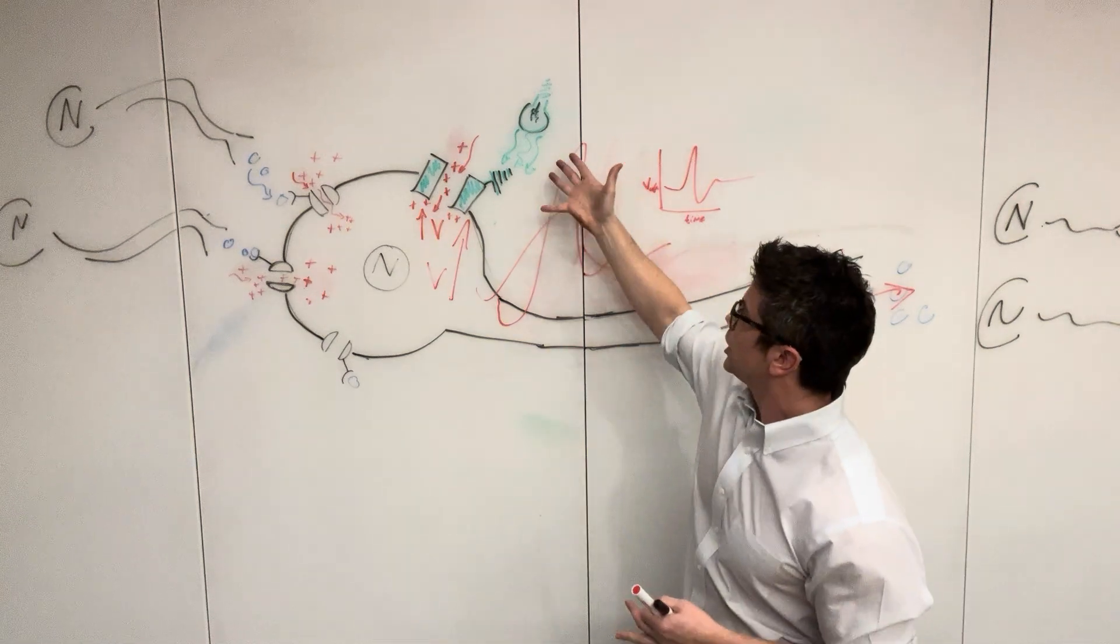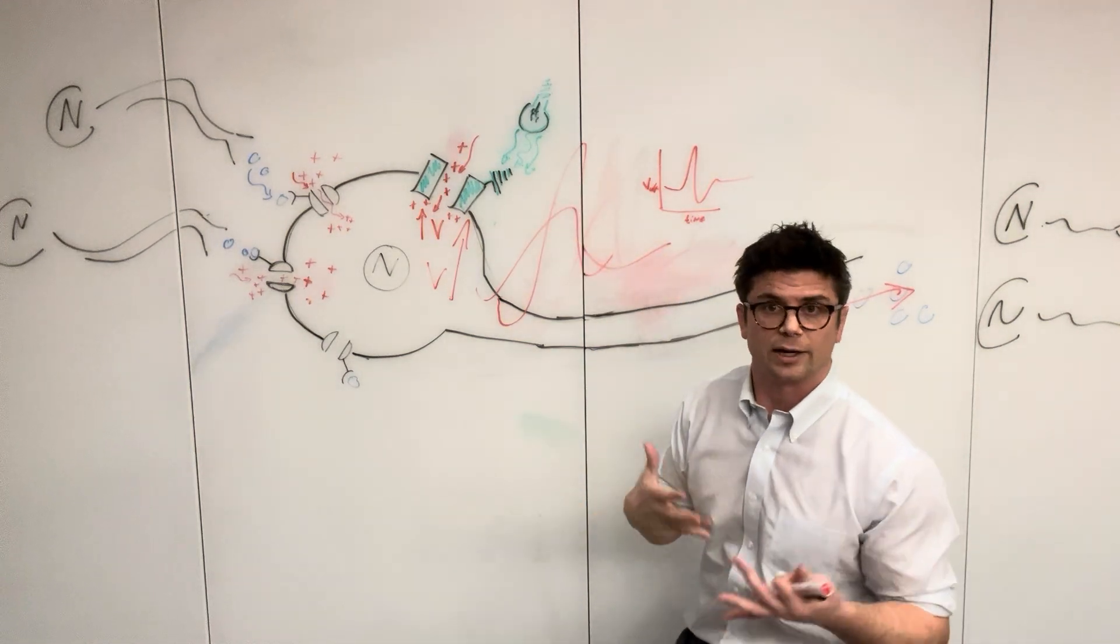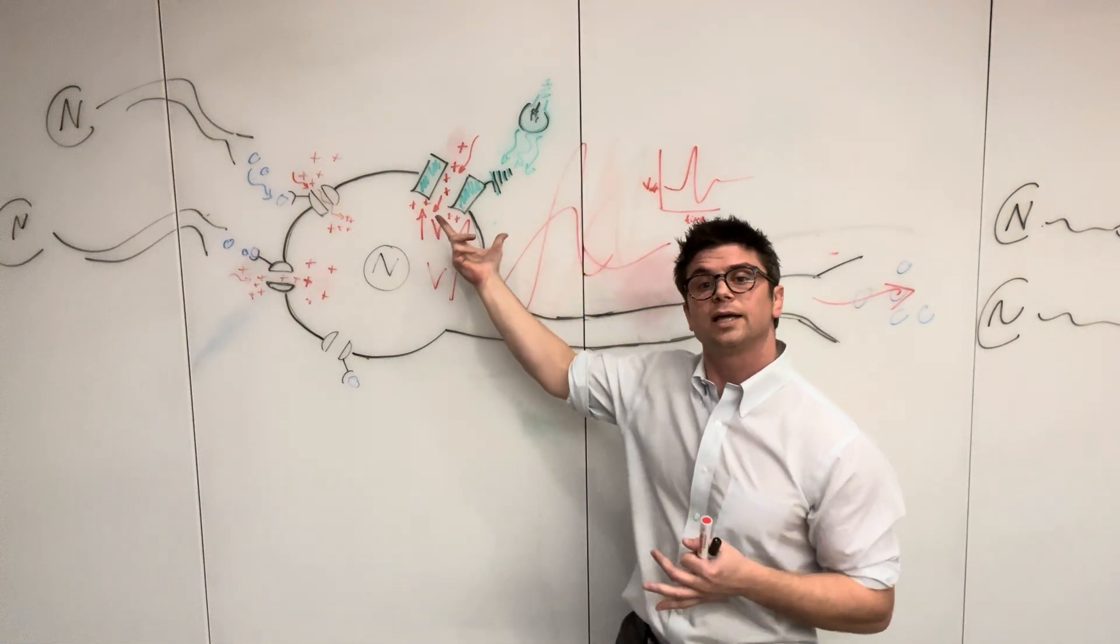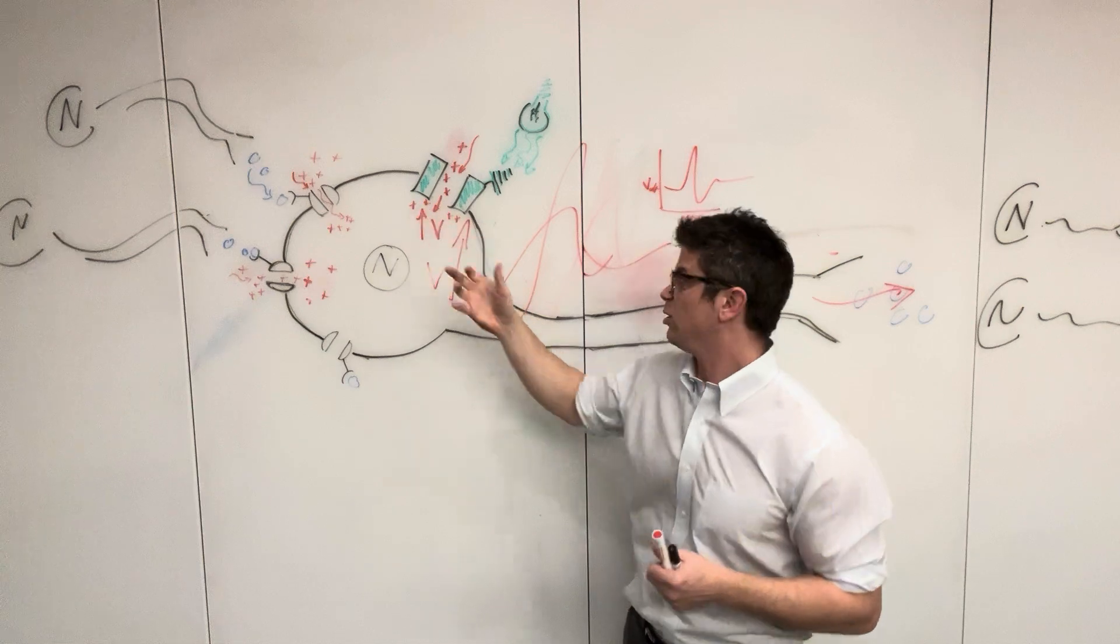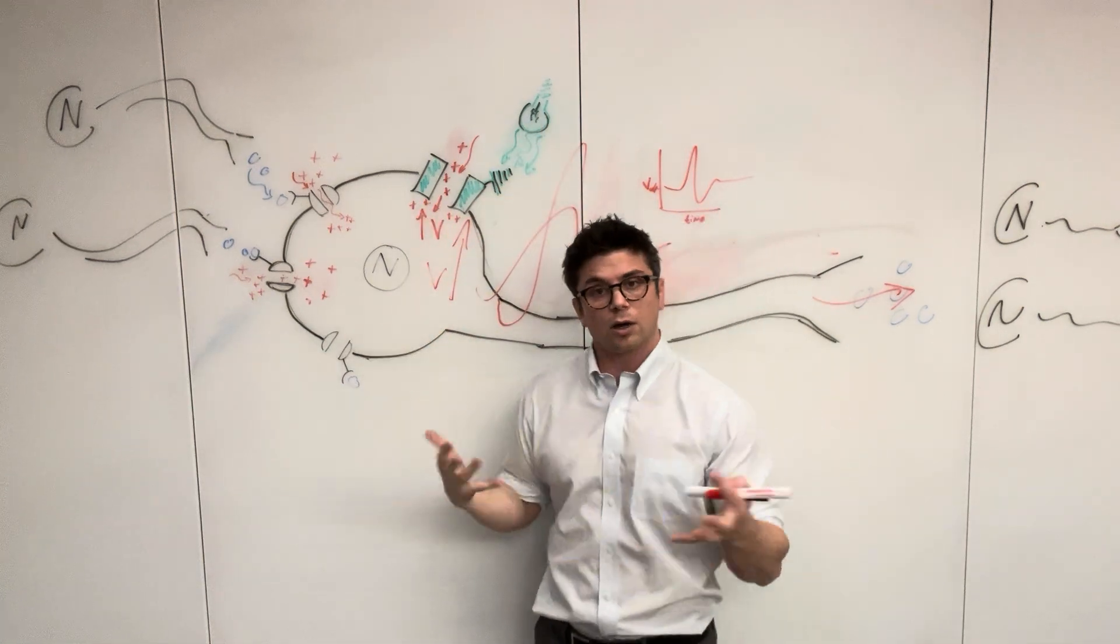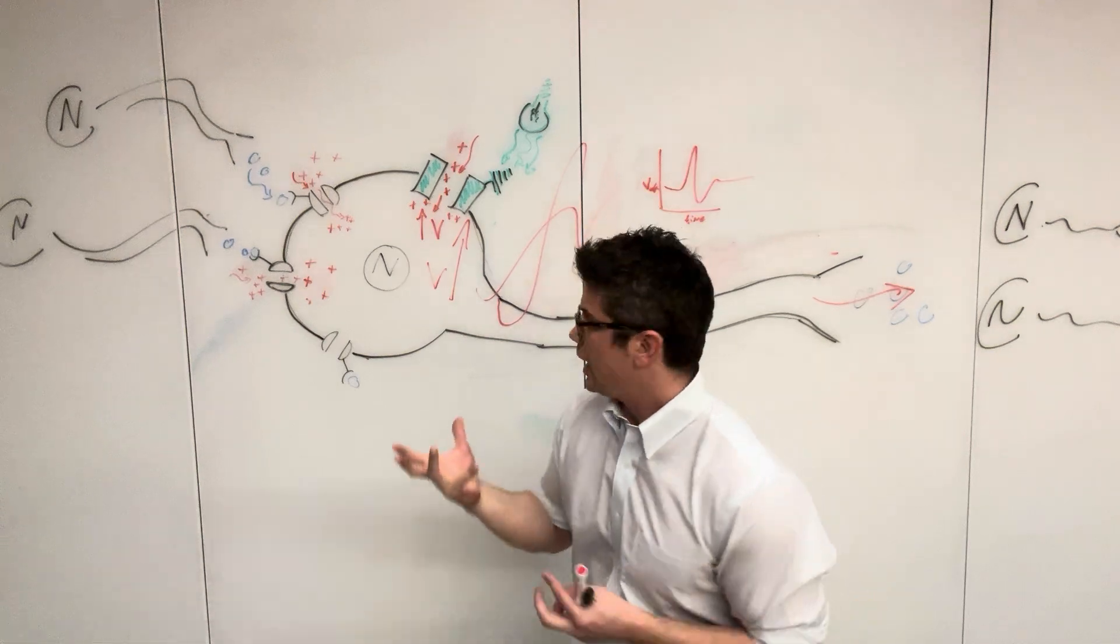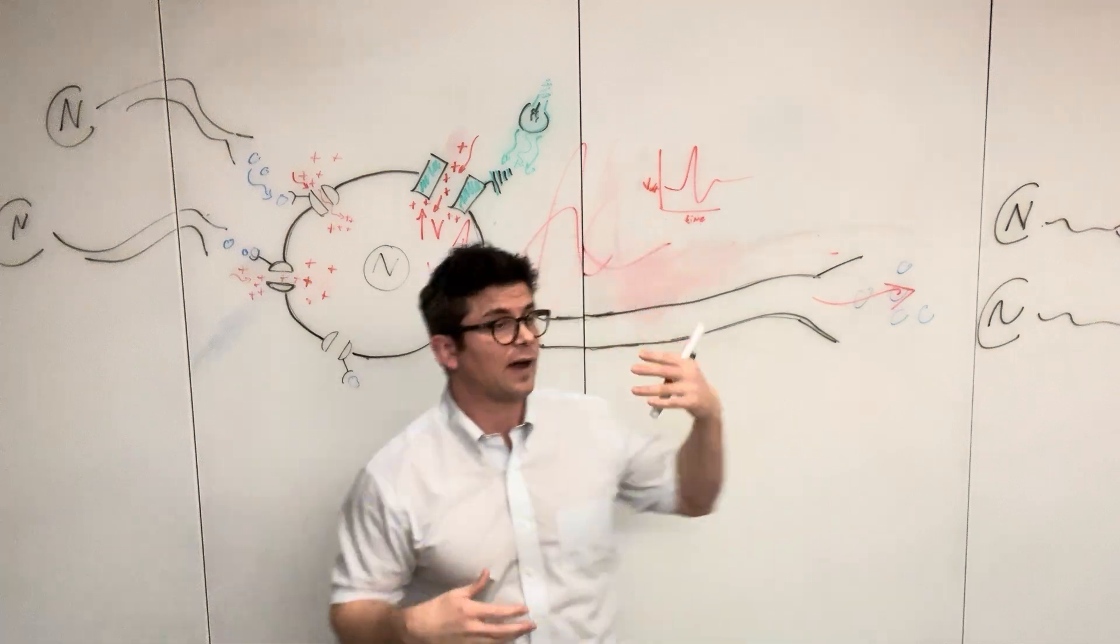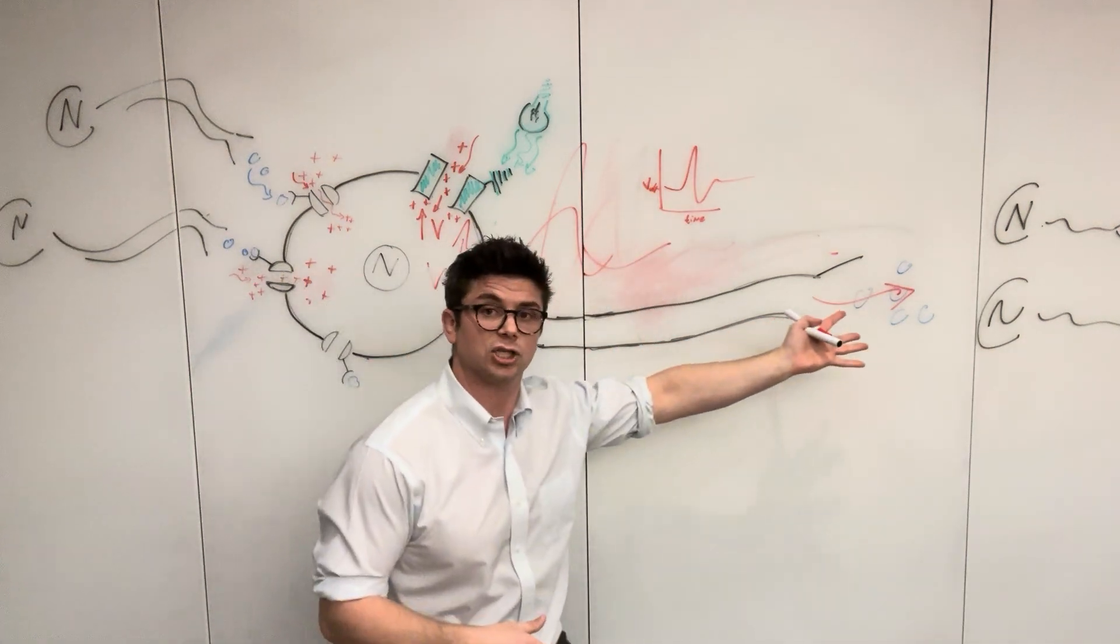So if we shine, so it only responds to a specific wavelength of light or a color of light. So if we shine green light onto a green light specific optogenetic channel, that causes the channel to open, lets in charge. The neuron only knows how to interpret charge. And so it says, oh, my charge is going up, my voltage is going up, it's time for me to fire an action potential, and it does its job.